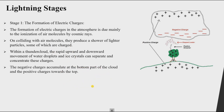The negative charges accumulate at the bottom part of the cloud and positive charges go to the top. In most cases, positive charges accumulate on the top and negative on the bottom. In very rare cases it can be the reverse, but typically positive is on the upper part and negative charges are at the bottom.